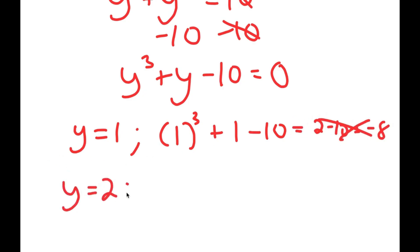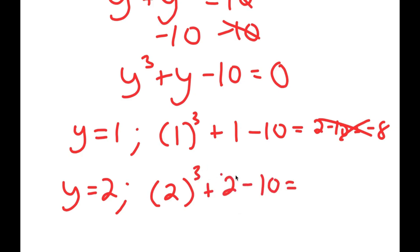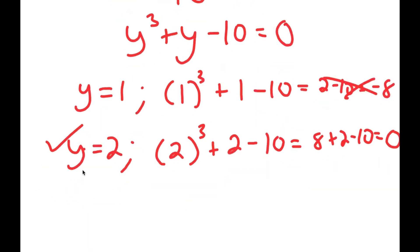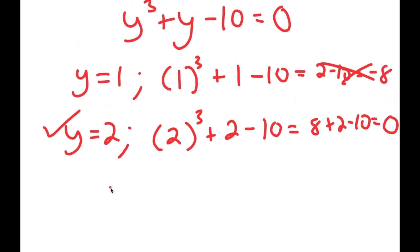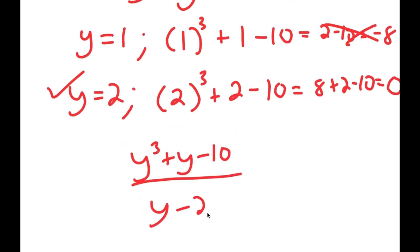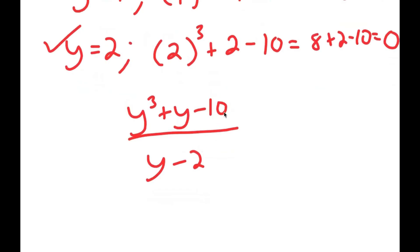Now if y is equal to 2, I get 2 to the power of 3 plus 2 minus 10. 2 to the power of 3 is 8, so I get 8 plus 2 minus 10, which is equal to 10 minus 10, which is equal to 0. So this is right, meaning y equals 2 is a solution. This also means I can divide y to the power of 3 plus y minus 10 by y minus 2, because 2 is a solution. If I plug 2 into y minus 2, I get 0, so I can use this to find the remaining solutions.